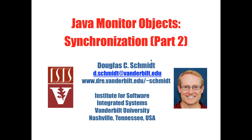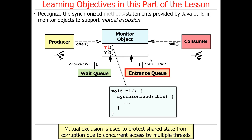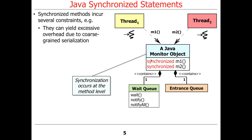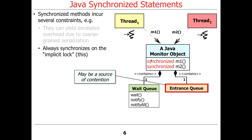This is the second part of our synchronization discussion for Java built-in monitor objects. We're going to talk about synchronized statements and compare and contrast them with synchronized methods. Synchronized statements require more explicit indication of where synchronization takes place. Problems with synchronized methods include excessive overhead due to coarse-grained serialization at the per-method level, and always synchronizing on the implicit lock — 'this' — which could be a source of contention.